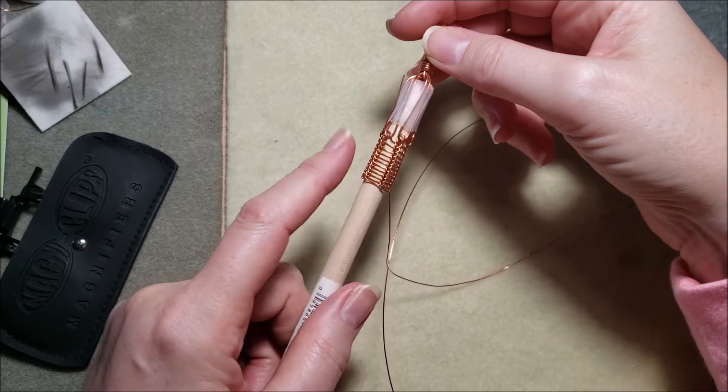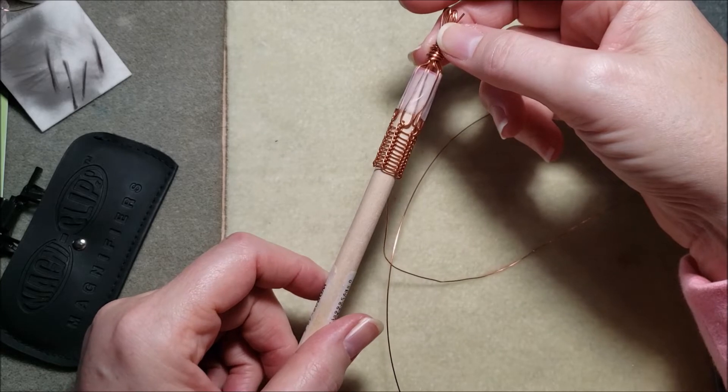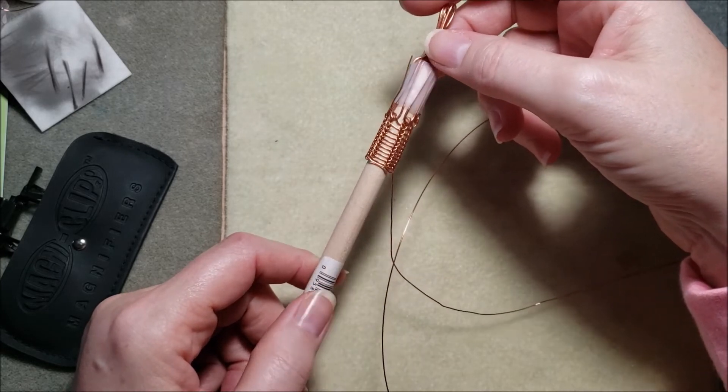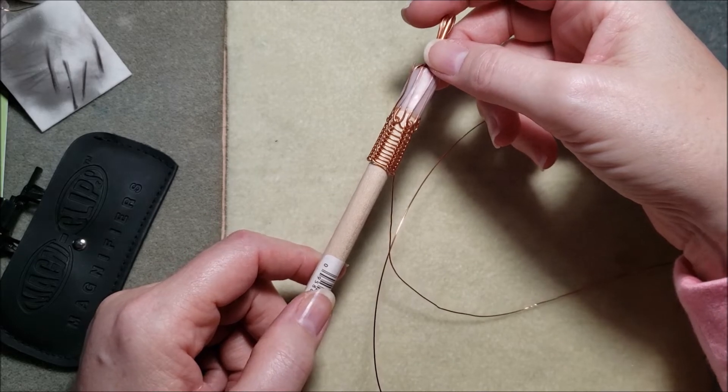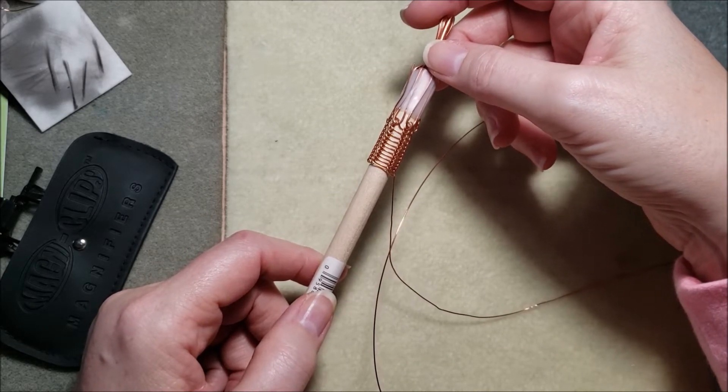The dowel supports the stitches as you go, and you can actually use different size dowels and different size wires to create Viking wire knit that has a different thickness.